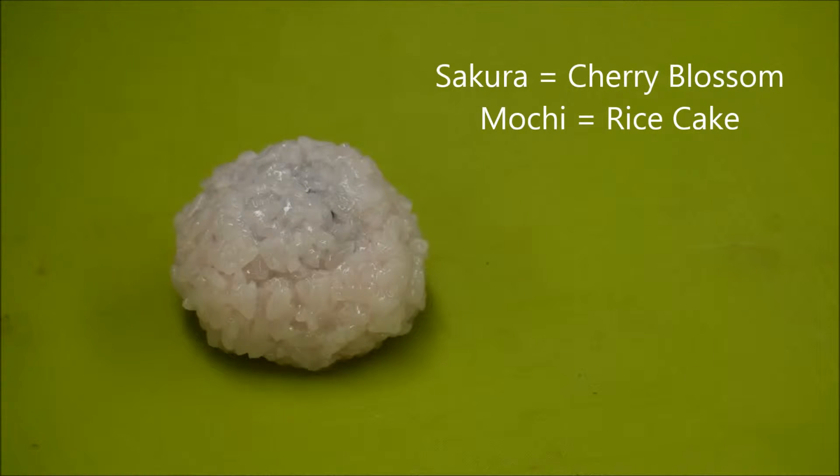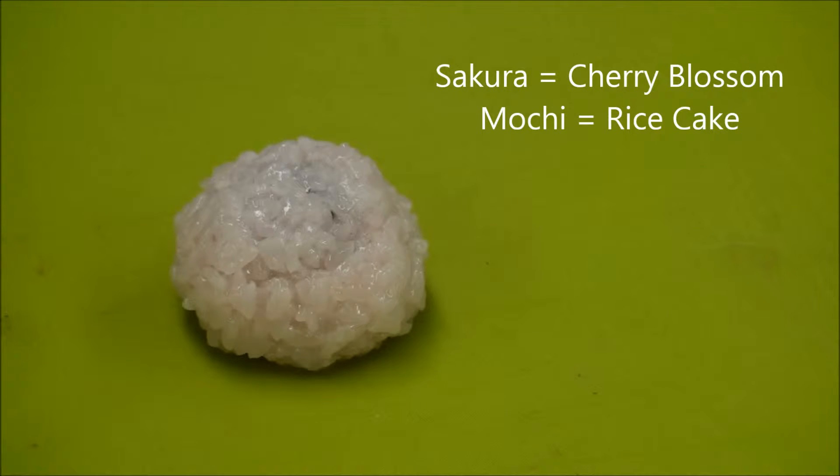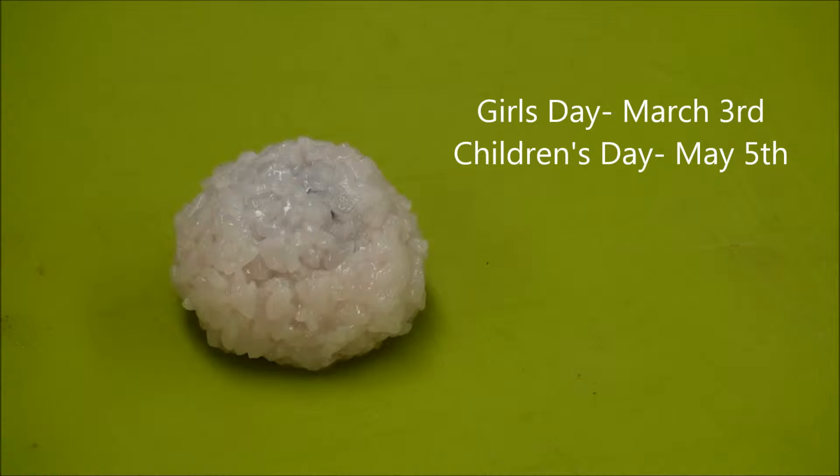We will be making sakura mochi, which is cherry blossom rice cake. This is traditionally eaten on Girls' Day, which is March 3rd. We also have this on Children's Day, which is May 5th.